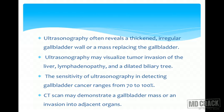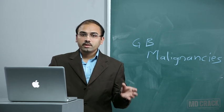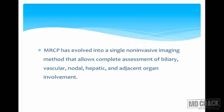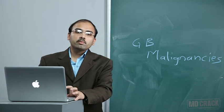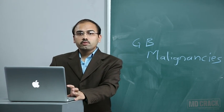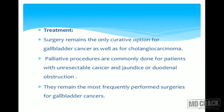Ultrasonography reveals a thickened, irregular gallbladder wall or mass replacing the gallbladder, and may visualize tumor invasion of the liver, lymphadenopathy, and dilated biliary tree. Its sensitivity ranges from 70–100%. CT scan may demonstrate gallbladder mass or invasion into adjacent organs. MRI is the mainstay of diagnosis, providing complete non-invasive assessment of biliary, vascular, nodal, hepatic, and adjacent organ involvement.